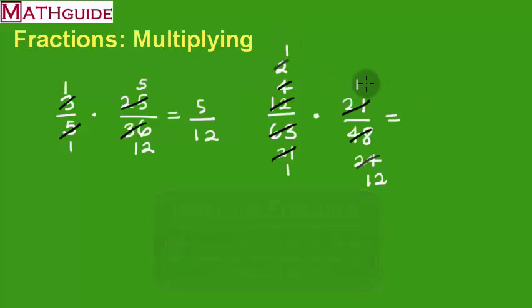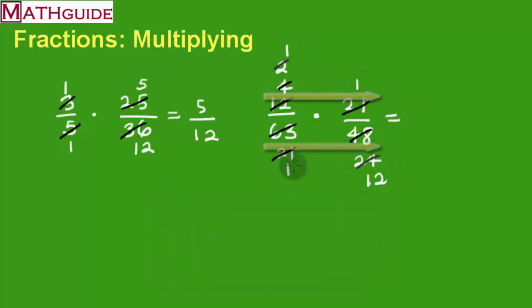So you do, you multiply numerator times numerator, denominator times denominator. So 1 times 1 is 1. And 1 times 12 is 12. And that's the answer for that problem.